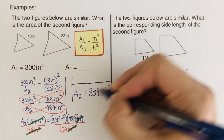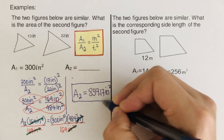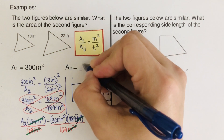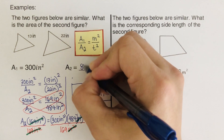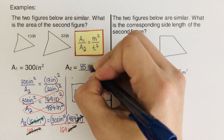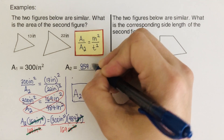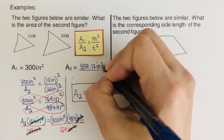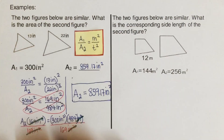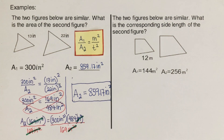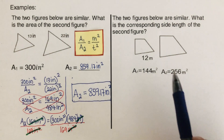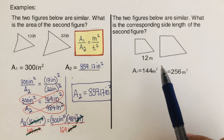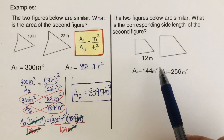So the area of the second picture is 859.17 inches squared, since these two are similar figures. At this point, I'd encourage you to pause the video and try the next problem on your own, then unpause and check your answer.